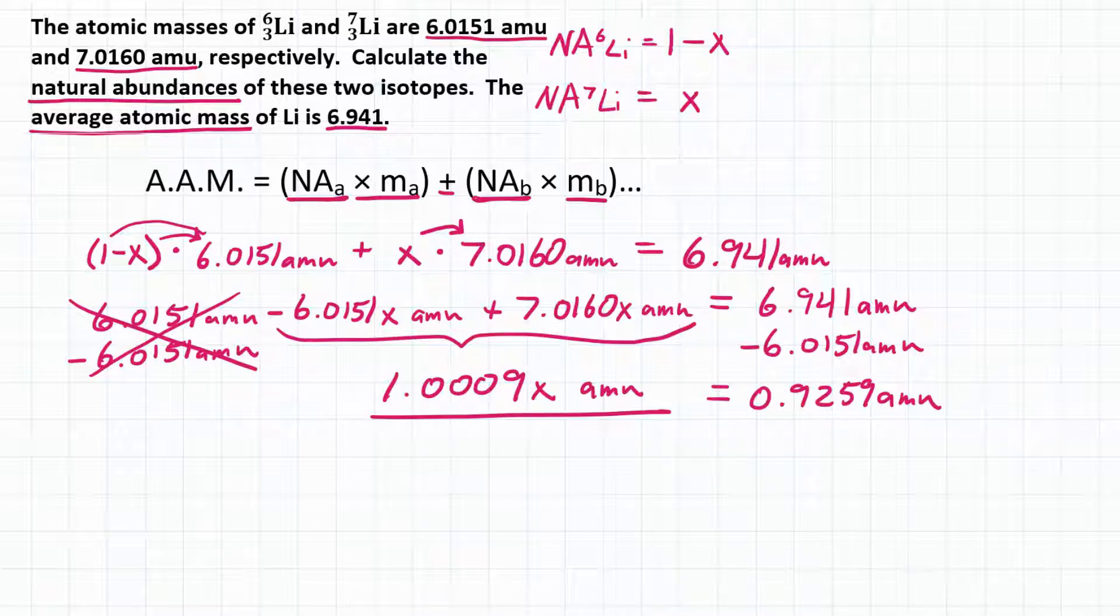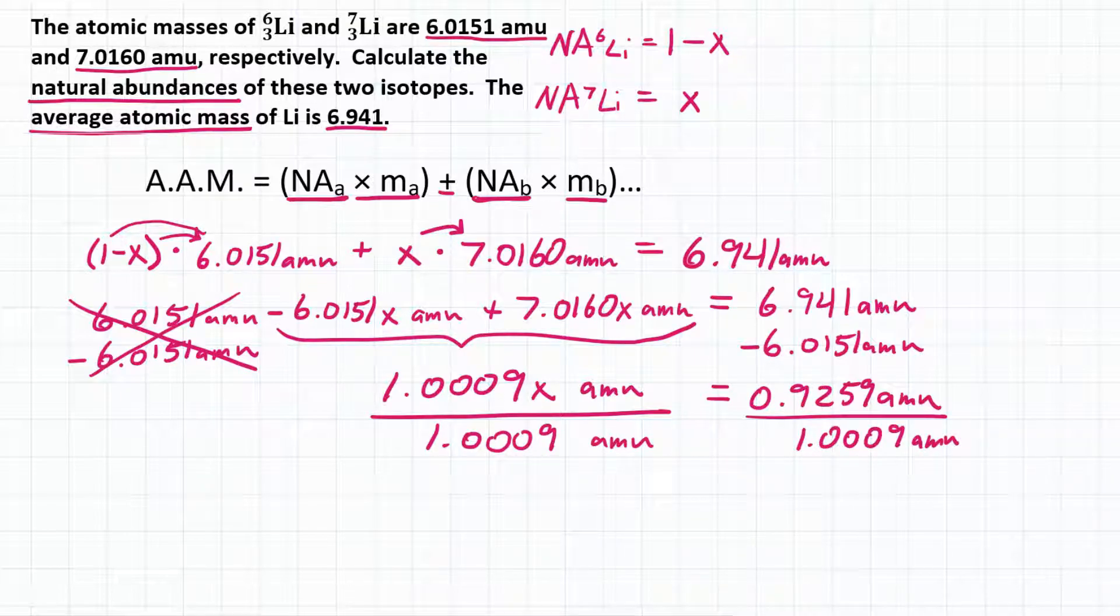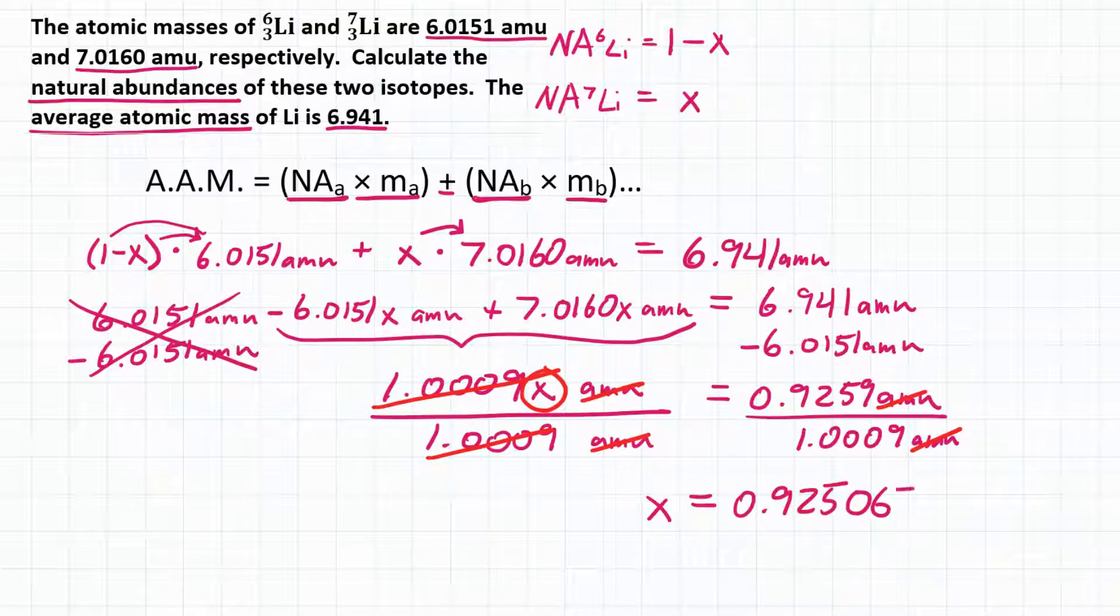Okay, so then now we're going to divide both sides by 1.0009 AMUs. Okay, I have to do the same on both sides for it to stay equal. And why we're doing that is so that on the left side, 1.009 cancels out, AMUs cancel out, and we effectively isolated our variable X. And on the right side, AMUs will cancel out, and then we can do the math to see what X equals. We're going to have 0.9259 divided by 1.0009, and that gives us 0.925067 and a couple more numbers.